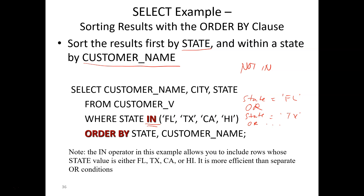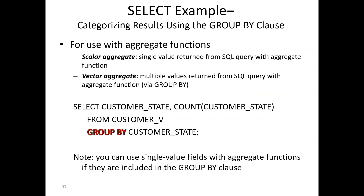The ORDER BY clause sorts the results of your SQL statement. You can have multiple levels of sorting — for example, first sort by state and within the state sort by customer name. Similarly, GROUP BY can also have multiple levels — for example, GROUP BY customer_state, city will group everything by state and then within the state group by city.